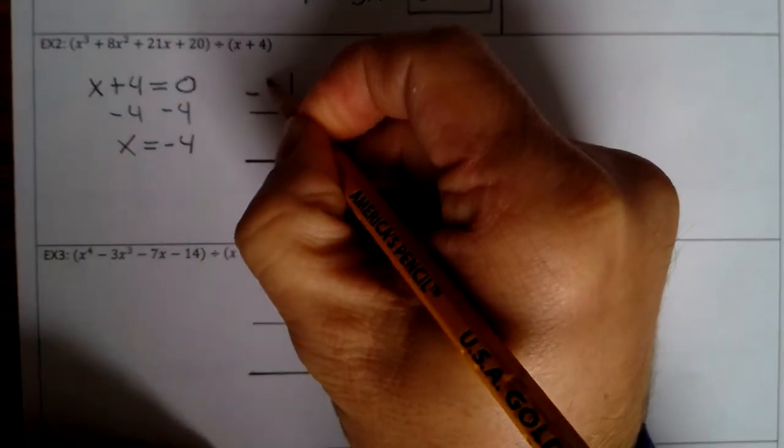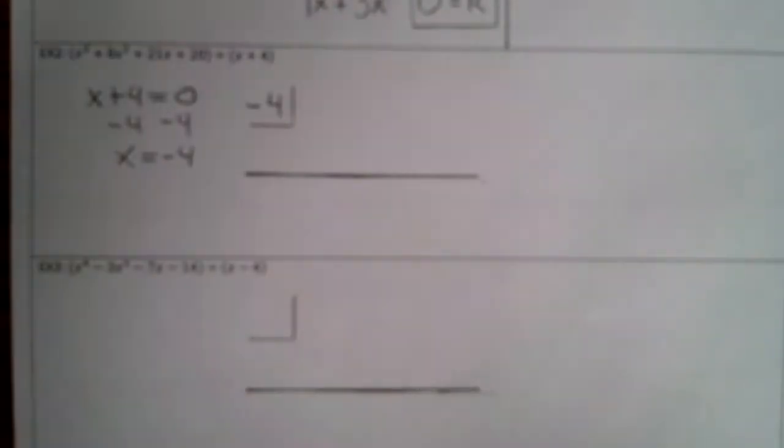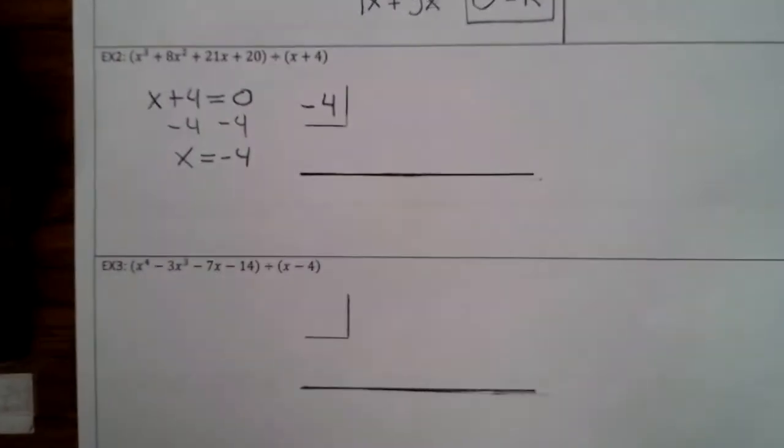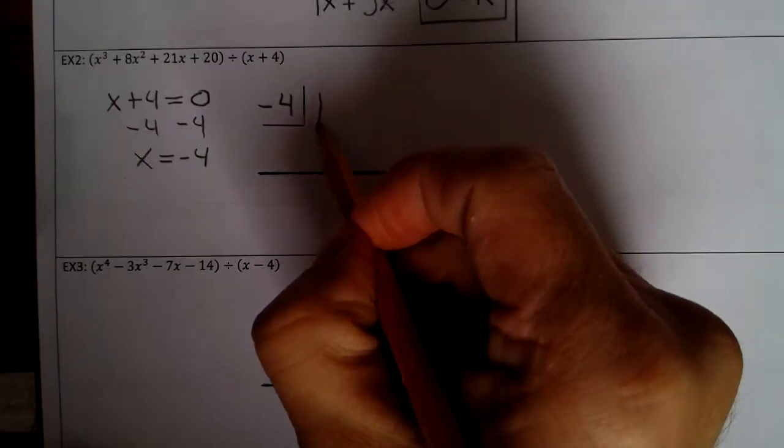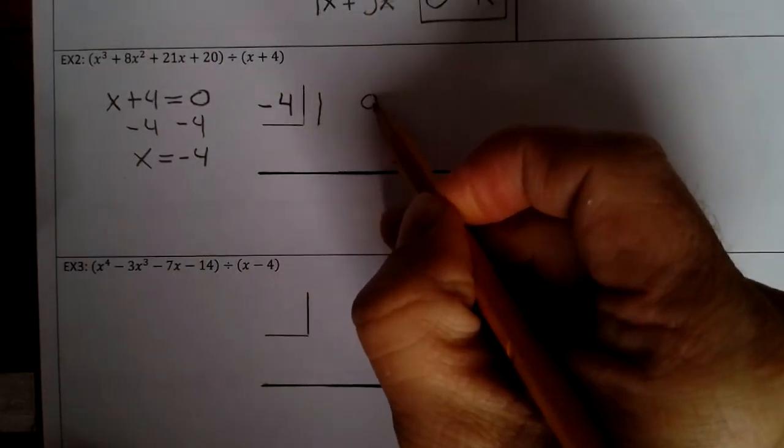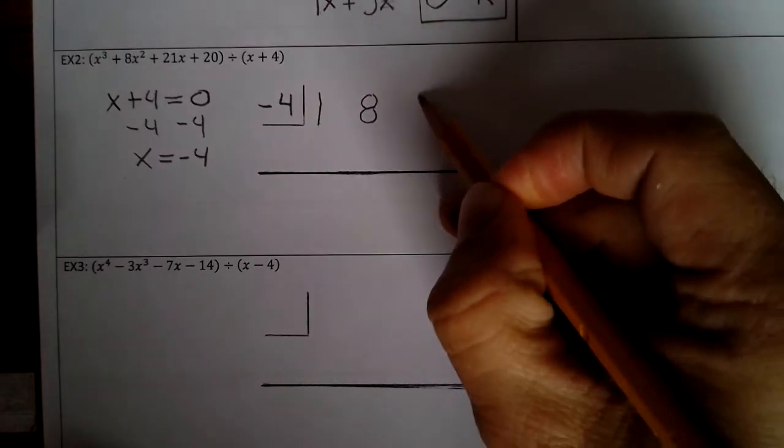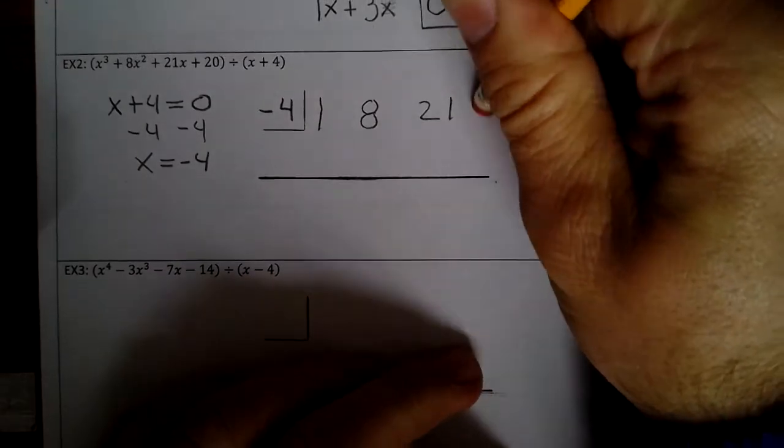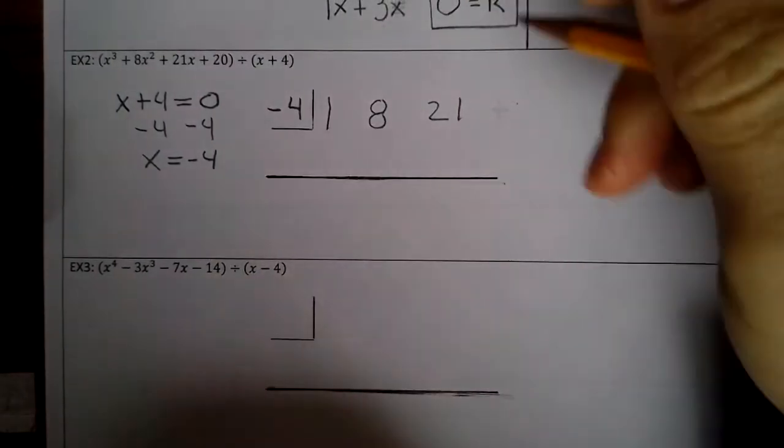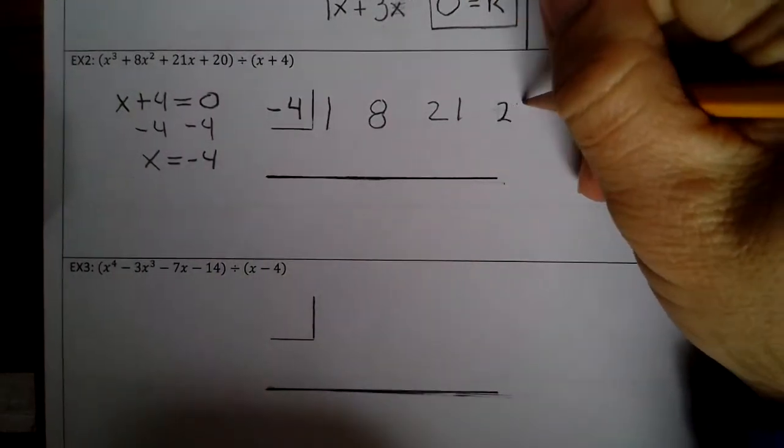And then we take the coefficients. So that's 1x³ + 8x² + 21x + 20. Looks like we need to extend this line just a little bit.